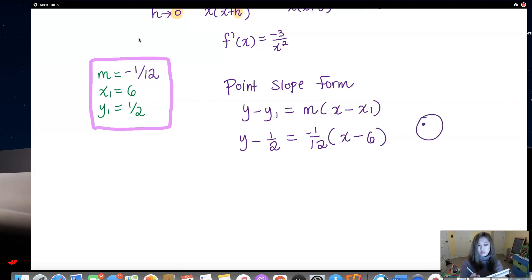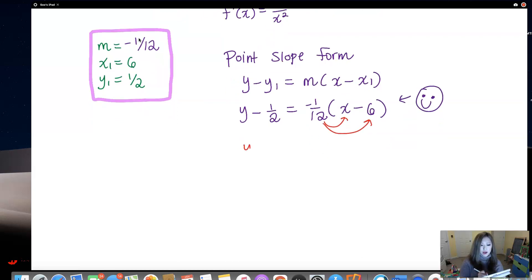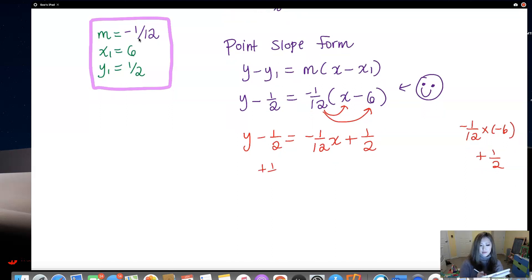But if you insist, oh I want to write my equation in slope intercept form, I mean okay, we're not going to stop you. You can keep on going and say Y minus half equals negative 1 over 12X. And if I multiply negative 1 over 12 times negative 6, that's going to be positive 1 half. And then last thing that I need to do is add half to both sides, add half to both sides. So Y equals negative 1 over 12X, and then half plus half is a whole. So this is going to be the slope intercept form. But on the exams, I'm fine with you leaving it in that form.